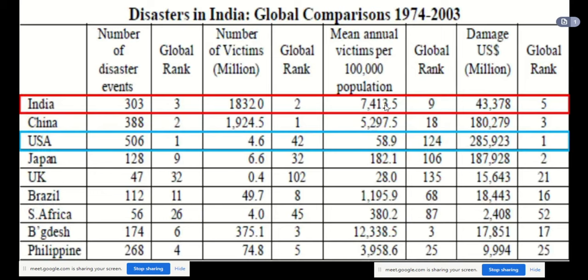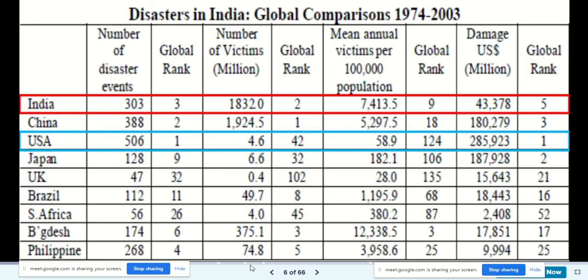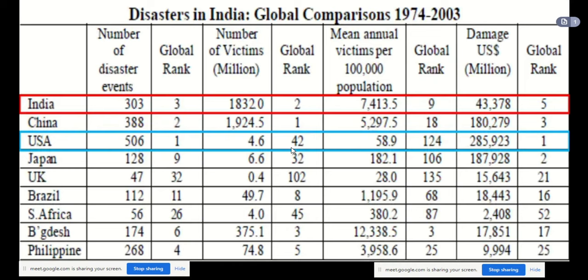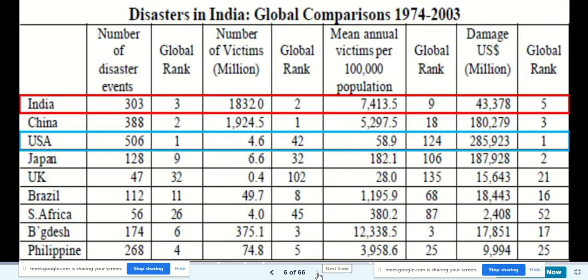In terms of damage in US million dollars, India ranks fifth, while the US ranks first — because damage includes not just human loss but also property damage, economic loss, and slowing of social development. This global comparison shows how badly India is affected by disasters, whether by number of events, number of victims, or amount of damage.